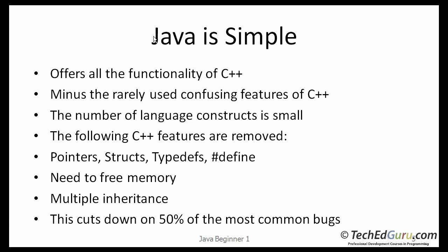The first qualifier: Java is simple. I agree with that. Java is definitely a simple programming language and it is easy to get started with. It offers all the functionality of C++ minus the rarely used, confusing features of C++. The number of language constructs is small compared to most other programming languages. They decided to remove some features of C++ like pointers, structs, type-defs, and defines — so Java doesn't have pointers, at least not the way they are implemented in C++.